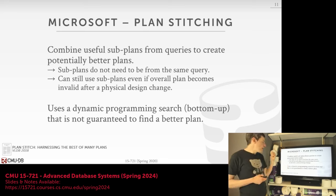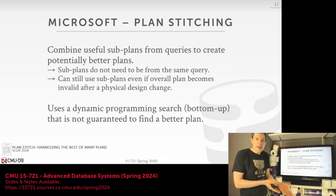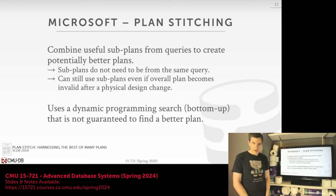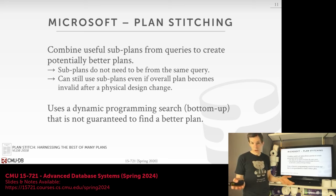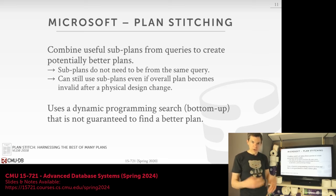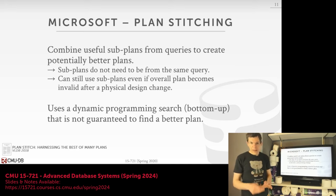Another benefit of Plan Stitching is that if a change in physical design makes a query plan invalid — say an index scan was defined but then the index was dropped — rather than throwing away the entire query plan, you can pull out valid pieces of it. The search method used to generate stitched plans is a dynamic programming bottom-up approach, similar to System R, where you pick the best sub-plan going level by level until you find the cheapest path. This is not guaranteed to find a better plan than the best plan you have so far, and not guaranteed to always produce a valid plan, but heuristics help ensure that.